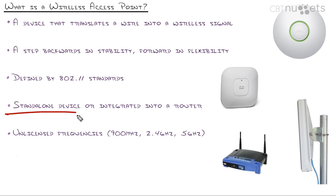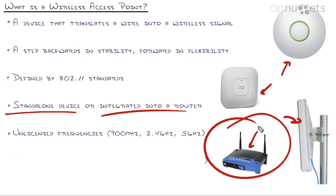Wireless access points come as standalone devices or integrated into a router. Integrated all-in-one devices come in many shapes, sizes, and vendors, but the problem is they are designed to have one device rule your entire house. If the signal isn't strong enough, you get weird incompatibilities when you bring other devices alongside it. I much prefer buying a pack of wireless access points that are all the same vendor — they speak the same language and you can manage them all from one interface.